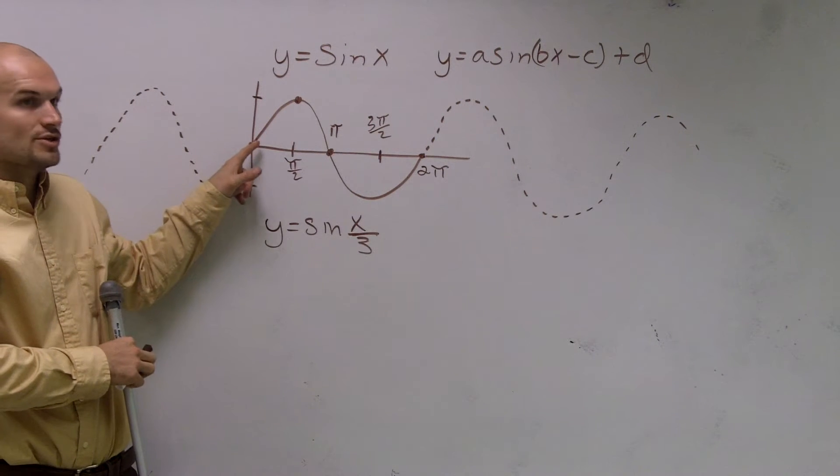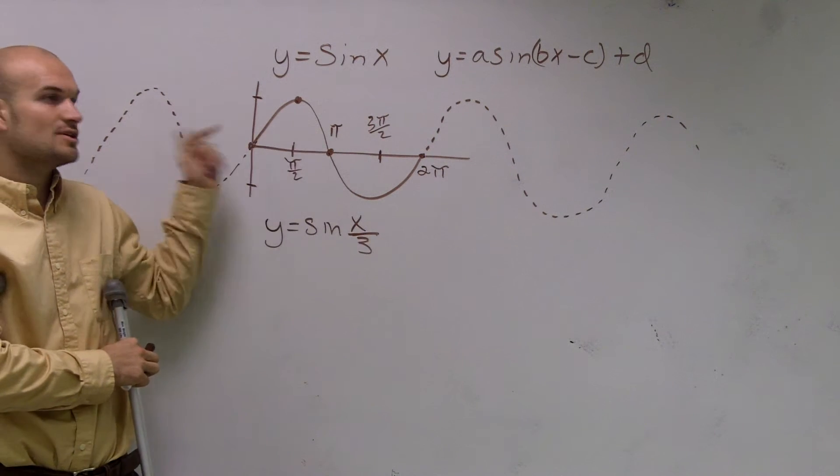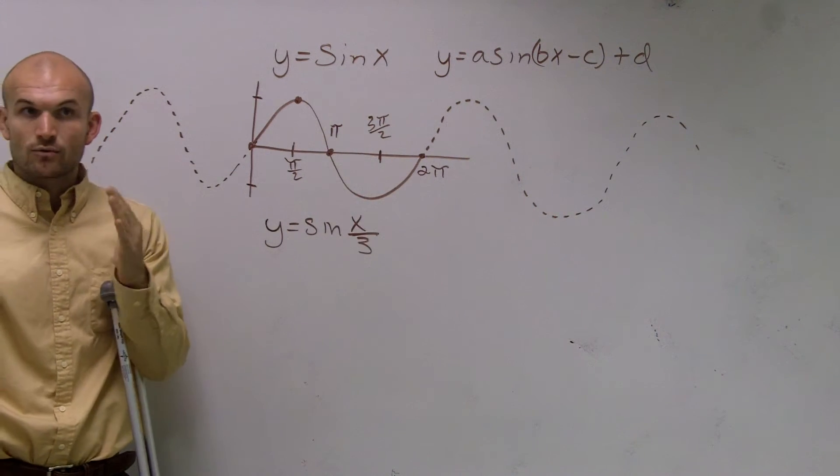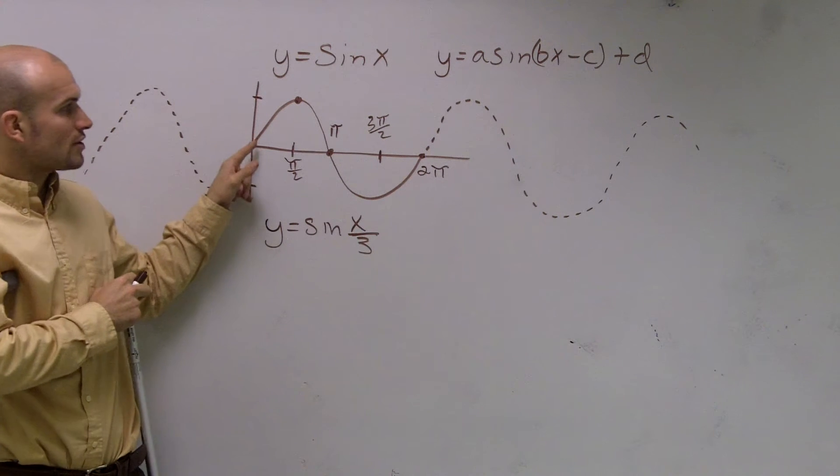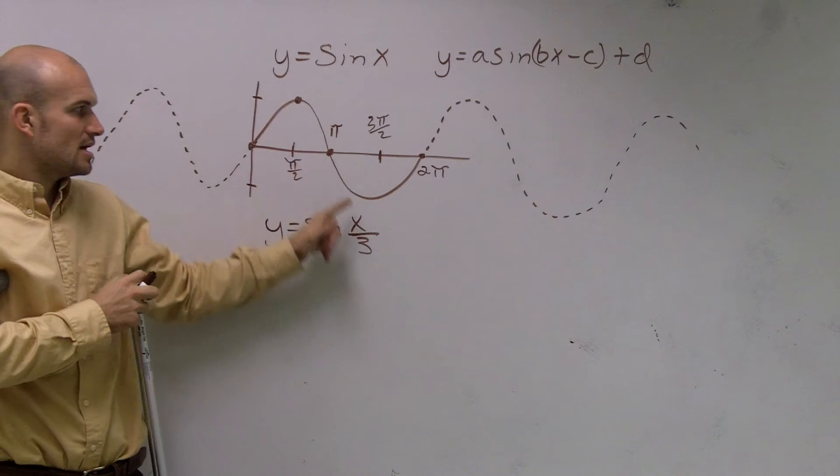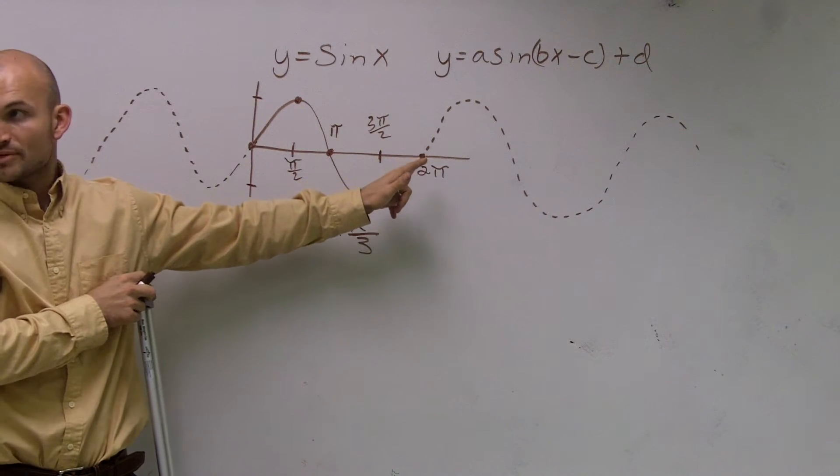If you guys notice, these graphs go infinitely to the left and infinitely to the right. That's why I have the dotted lines. But we're just going to be focused on one period—what it takes for our graph to complete a cycle from your starting point, do its stuff, and then go back to where the starting position would be again.